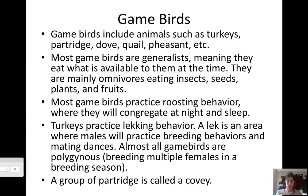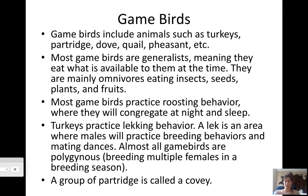Game birds include turkeys, partridges, and quail — anything you would hunt. They are generalists and will eat whatever is available: insects, grasses, seeds. They are mainly omnivores, which is the trademark of a generalist. Most game birds practice roosting behavior — you'll find them roosting together in a tree as a defense mechanism, since there is power in numbers. They congregate at night to sleep.